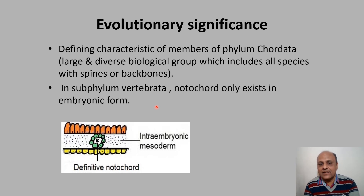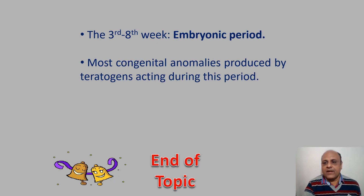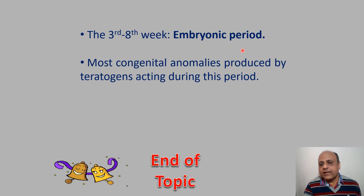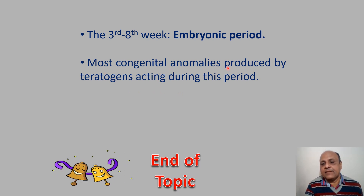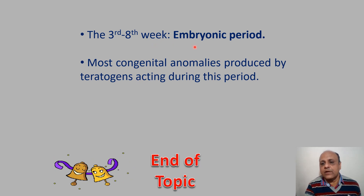This completes the topic of gastrulation and notochord. The third to eighth week is referred to as the embryonic period, while the first two weeks are the pre-organogenesis period. Most congenital anomalies produced by teratogens occur when they act during this third-to-eighth-week embryonic period, so this period carries great clinical importance. Thank you.